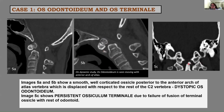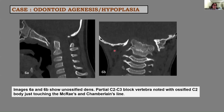Image 5C shows a tiny ossicle just at the tip of the odontoid process, suggestive of persistent ossiculum terminale due to failure of fusion of the terminal ossicle with the rest of the odontoid. Coming to odontoid agenesis, images 6A and 6B show an un-ossified dens with partial C2-C3 block vertebra, and the ossified C2 body just touching McRae's and Chamberlain's lines, suggestive of odontoid agenesis with basilar invagination.